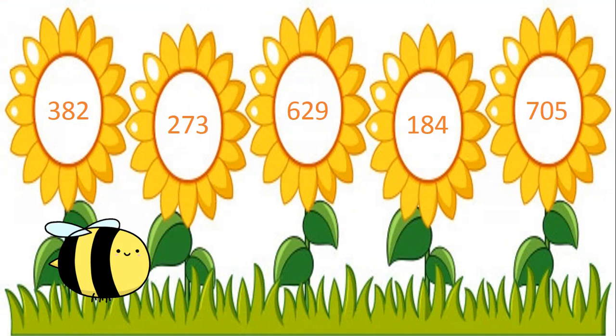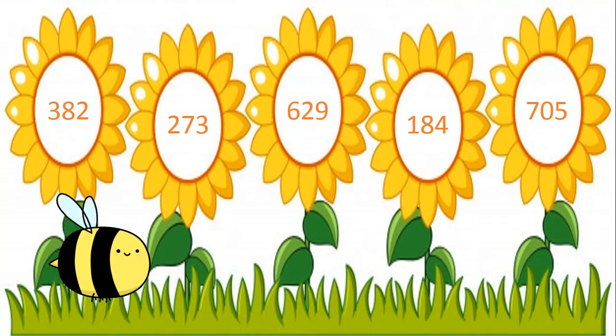The digits in the hundreds place are: 3, 2, 6, 1, 7. Which digit in the hundreds place is the smallest? Yes, 1. So the number 184 is the smallest number here.